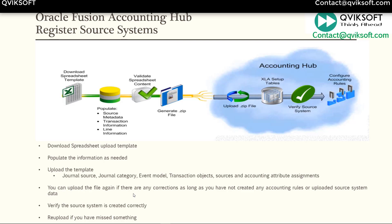You can upload the file again if there are any corrections, as long as you have not created any accounting rules or uploaded source system data. Verify the source system is created correctly — you can inquire and see all the information is correct. If anything is missing, re-upload to fix the information.